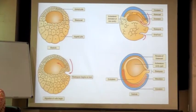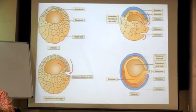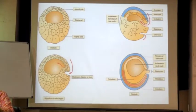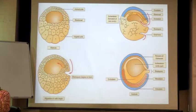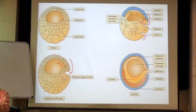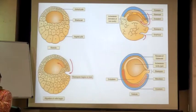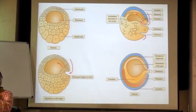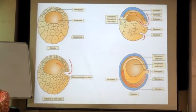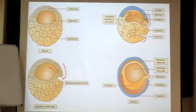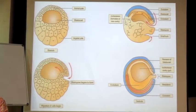This blastula doesn't stop here — it undergoes a dynamic process of changing the positions of the cells, which is known as gastrulation. During gastrulation, cells are moving through major processes technically called emboly and epiboly. Cells are moving inside through a pattern — the specific point from where the movement begins is known as blastopore.